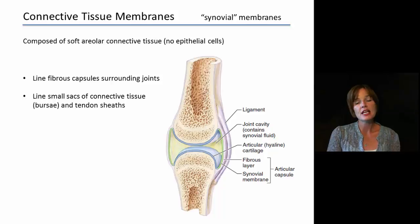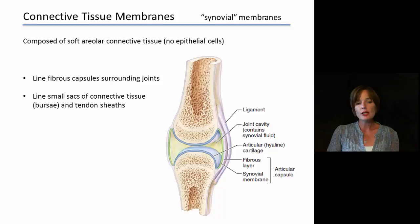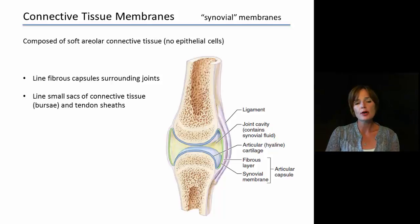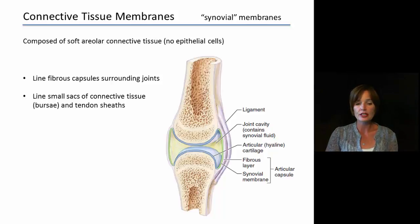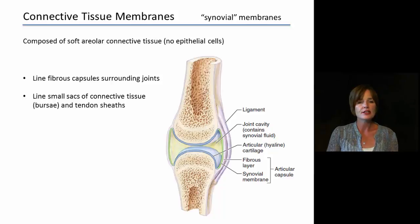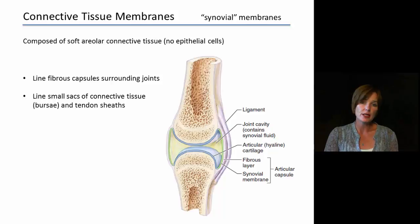Connective tissue membranes are also called synovial membranes. These are composed of soft areolar connective tissue, and in this case there are no epithelial cells as part of these membranes. They line the fibrous capsules around joints, and in some cases they also line small sacs of connective tissue called bursa and also some tendon sheaths. These allow for movement of body parts without a lot of abrasion between the two parts.